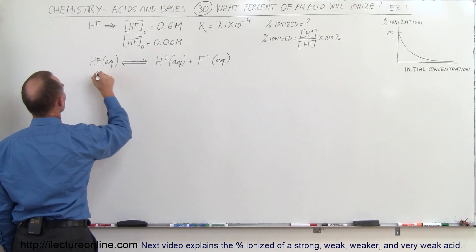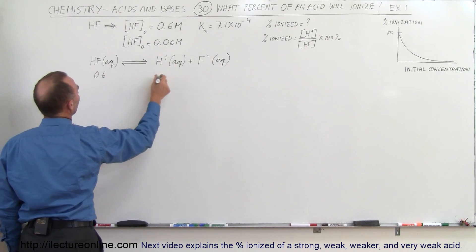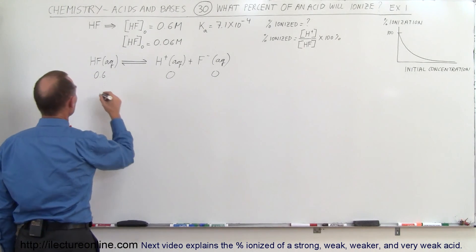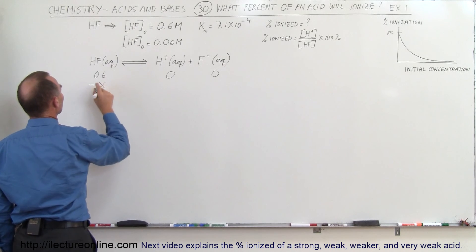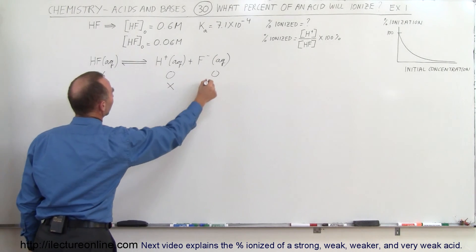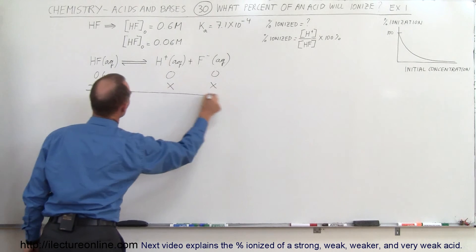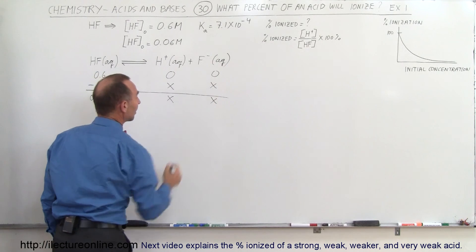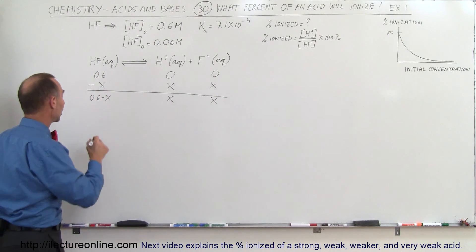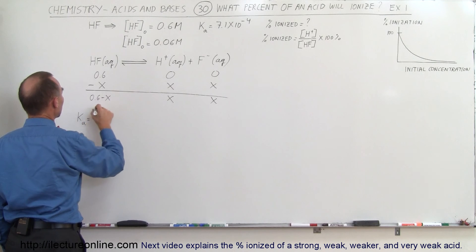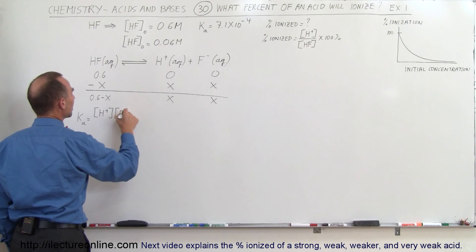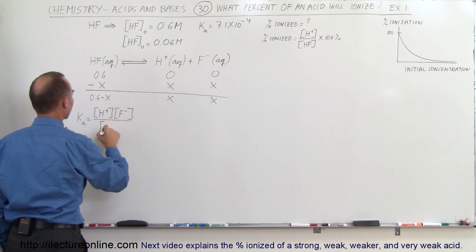Initially we start out with a 0.6 molar concentration, and we have 0 and 0 concentration before the reaction starts. After the reaction takes place, the change is that this will be reduced by a certain amount x and this will be increased by a certain amount x, so that the final concentration here would be 0.6 minus x, and here would be x and there would be x. The ionization constant Ka by definition is equal to the product of the concentration of the hydrogen ion times the concentration of the conjugate base, divided by the final concentration of the acid remaining in solution.